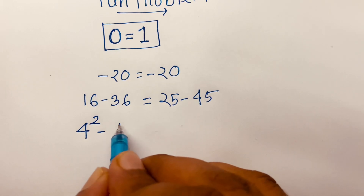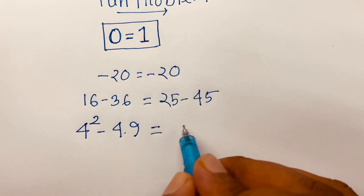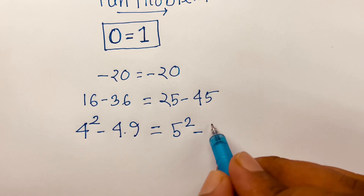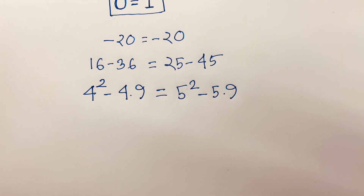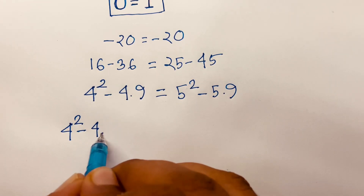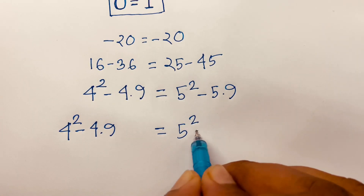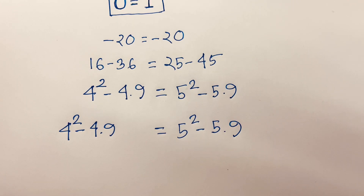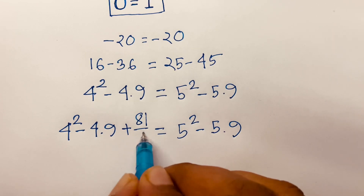I can say 16 is 4 squared, because 4 times 4 is 16. Minus 36 is 4 times 9, since 4 times 9 is 36. And 25 is 5 squared, minus 45 is 5 times 9. So: 4² minus 4×9 is equal to 5² minus 5×9.